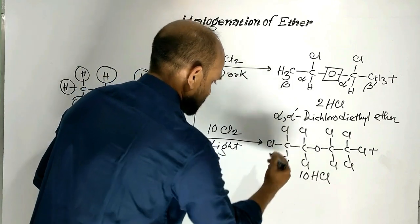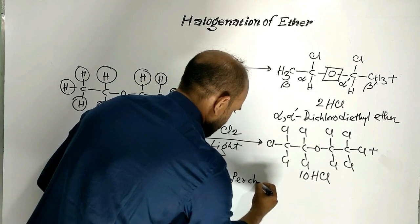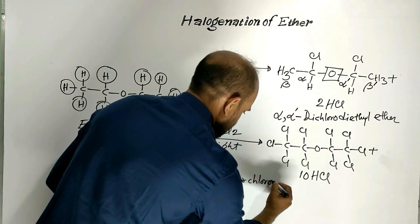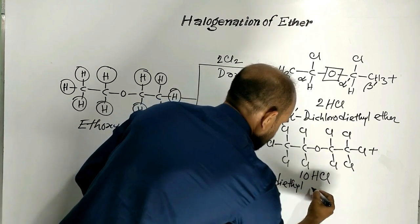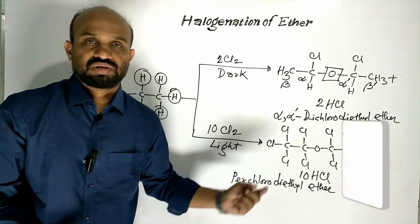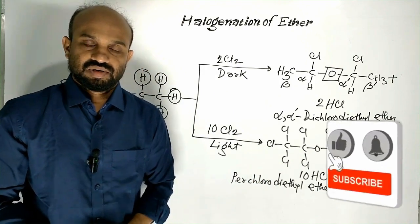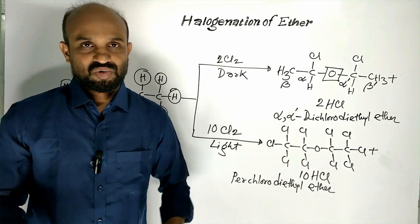This compound is named as perchloro diethyl ether. Halogenation of ether, ethoxy ethane. Thanks for watching.